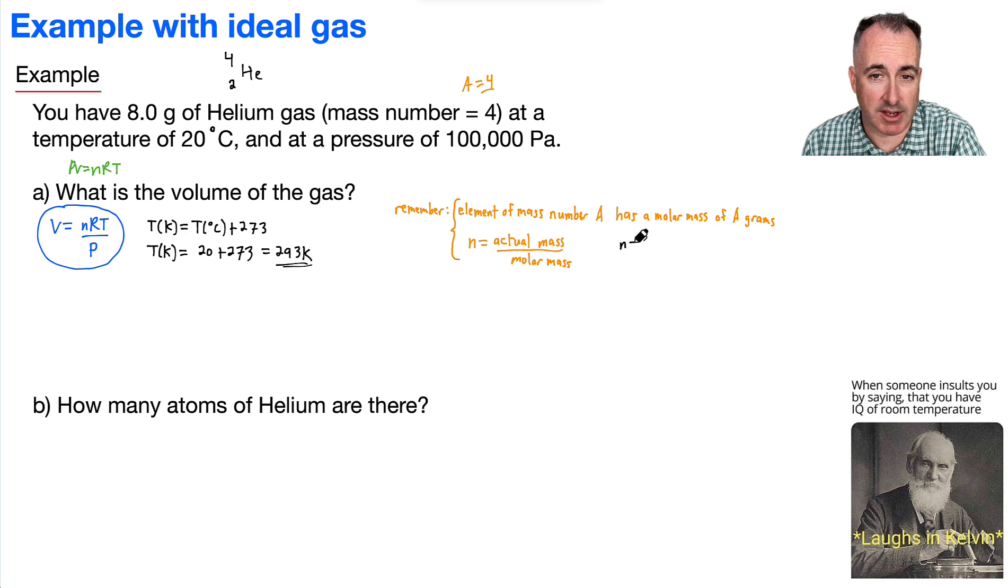I can say that n, the number of moles, is going to be the actual mass that we have, which is 8 grams, all that divided by the molar mass, which I know is 4. That means there's 4 grams for every mole. If that's the case, the grams will cancel out. I end up with 8 over 4, which is just 2. So I have 2 moles.